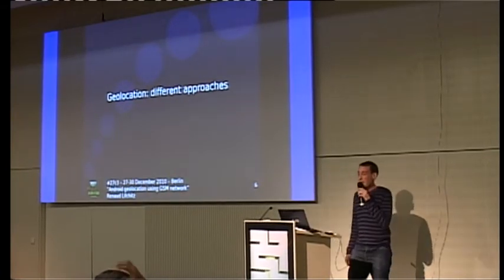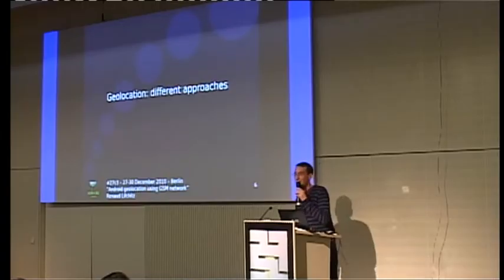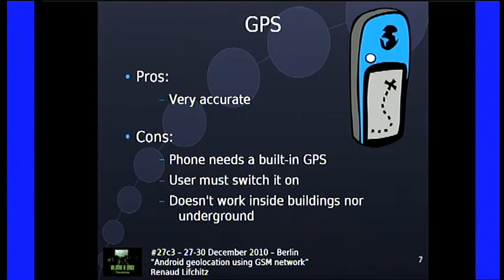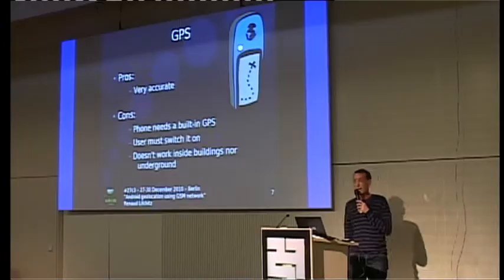Let's talk about geolocation. To geolocate a phone you have different ways. You can use the integrated GPS found on most phones — very accurate, three or four meter precision. But the problem is you need a GPS in your phone, not all phones have it. The user must switch it on — it's not enabled by default because of battery consumption. GPS also doesn't work inside buildings or underground, like in subways.